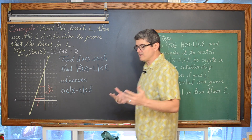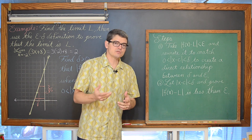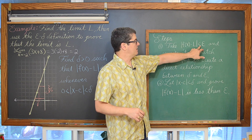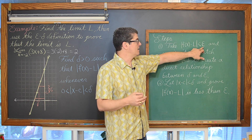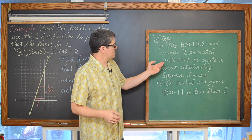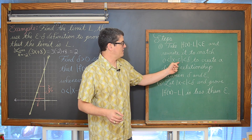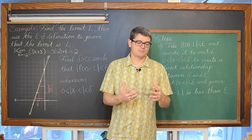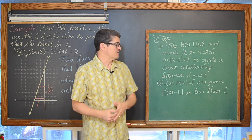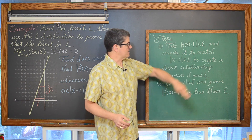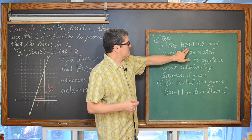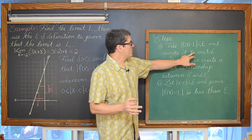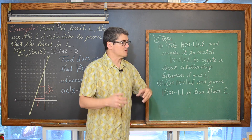Now, how are we going to do that? With all of the delta-epsilon proofs we are going to work on, these are the steps you want to do. You want to take the absolute value of f(x) minus L, which we are going to assume initially is less than epsilon, and rewrite it to match the notation of 0 < |x - c| < delta. When we get the f(x) minus L expression to match this x minus c notation, that is going to allow us to create a direct relationship between epsilon and delta.